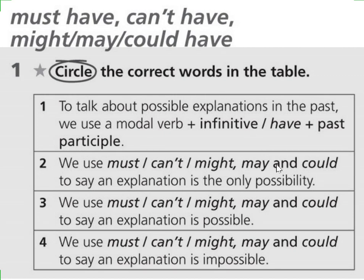Okay guys, so for a quick revision, I want to talk about these past modal verbs one more time. Hopefully this will be helping better to you in terms of understanding the topic well. So guys, we are talking about must have, can't have, and let's say three parameters: might have, may have, could have plus past participle.